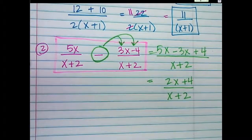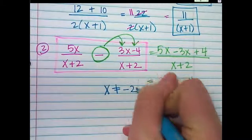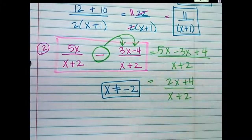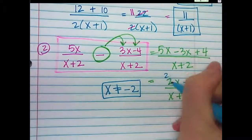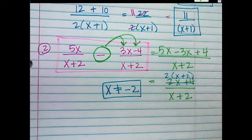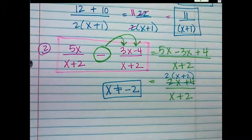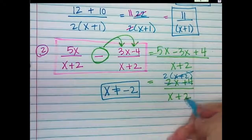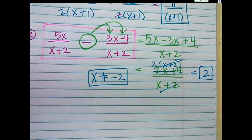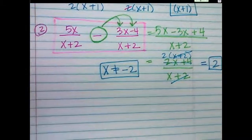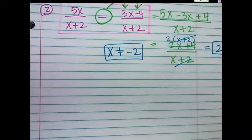So combine my terms on the top: 2x plus 4 over x plus 2. What's our restriction here? x cannot equal negative 2. Can I simplify anything? I could take out a 2 on top and I'm left with x plus 2. And then x plus 2 cancels. So my answer is just 2.